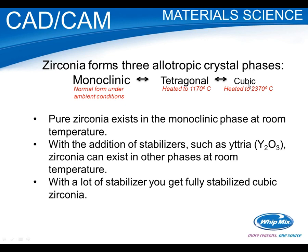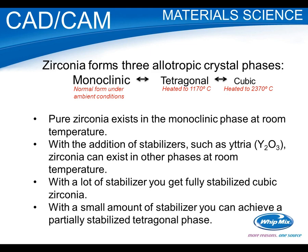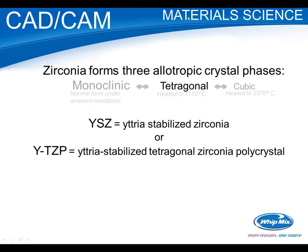If we load zirconia with enough stabilizer, we can get all the way to the cubic zirconia that we see as that nice, beautiful diamond-like material. But if we dope a small amount, we can achieve this partially stabilized tetragonal phase. We have the three allotropes, and we're tricking it to stay in the tetragonal — but it's partially stabilized, meaning it can still be converted. So now maybe the names start to make more sense: Yttria Stabilized Zirconia, or Yttria Stabilized Tetragonal Zirconia Polycrystal — we've stabilized it into this tetragonal structure.